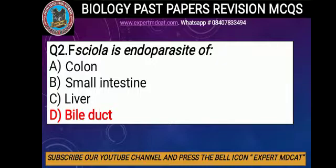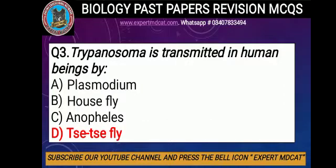Question number 3: Trypanosoma is transmitted in human beings by? Trypanosoma causes African sleeping sickness. Options are: A) Plasmodium, B) Housefly, C) Anopheles, D) Tsetse fly. The correct option is D, tsetse fly. The tsetse fly transmits Trypanosoma, which causes sleeping sickness in human beings.